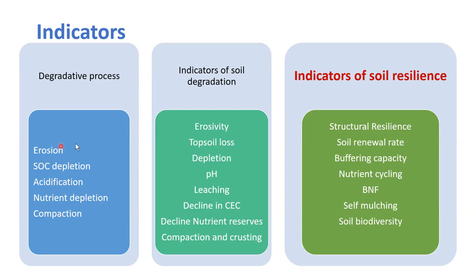Indicators: there are degradative processes which basically affect soil characteristics — erosion, soil organic carbon depletion, acidification, in some soils alkalinization, nutrient depletion, and compaction. These are the basic degradative processes which can affect soil characteristics. Degradation indicators include erosivity — the extent of erosion in the soil, loss of topsoil when the soil is degraded and eroded, depletion of nutrients, changes in pH, leaching of different chemicals, decreased CEC if you have high pH.